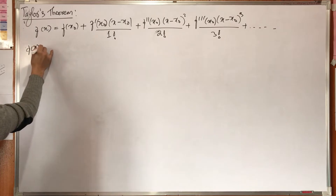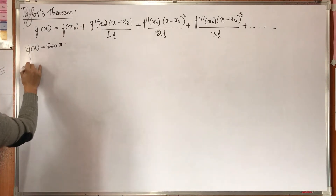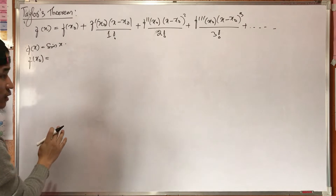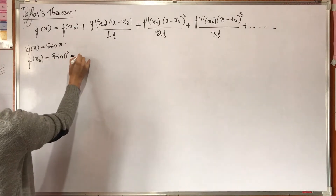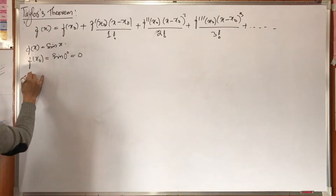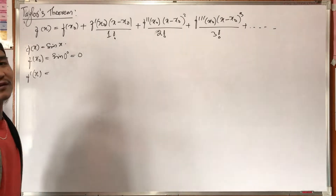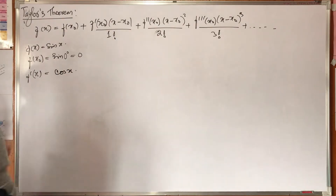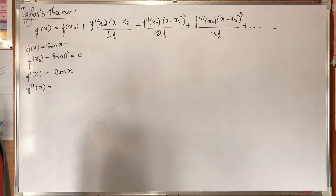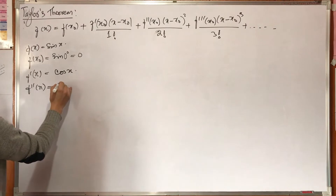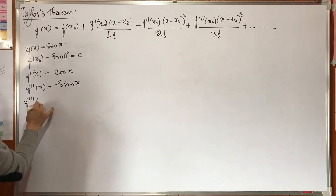This is f(x) = sin x. Here, f(x0) where x0 = 0: sin(0) is 0. So f(x0) = sin(0) = 0.